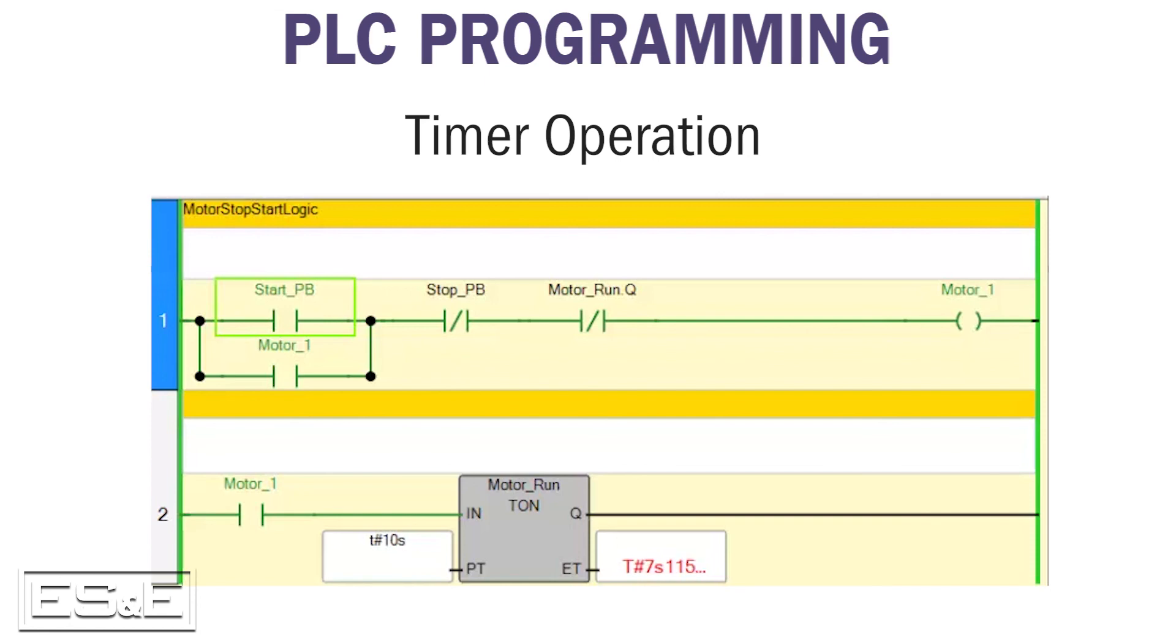On the next rung, motor 1 will be true, which will cause the timer instruction to start timing. When the accumulation value, shown as .ET, is equal to the preset value, shown as .PT, the done bit will change from 0 to 1. In the first rung, the motor will run as long as the done bit is equal to 0. Now that the done bit is equal to 1, the logic solves false and the motor will turn off.